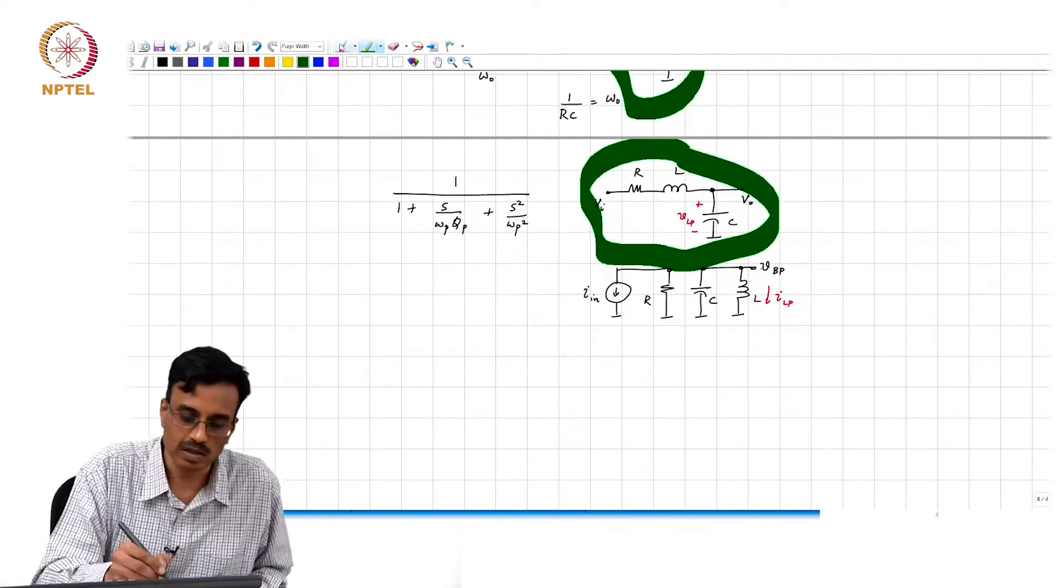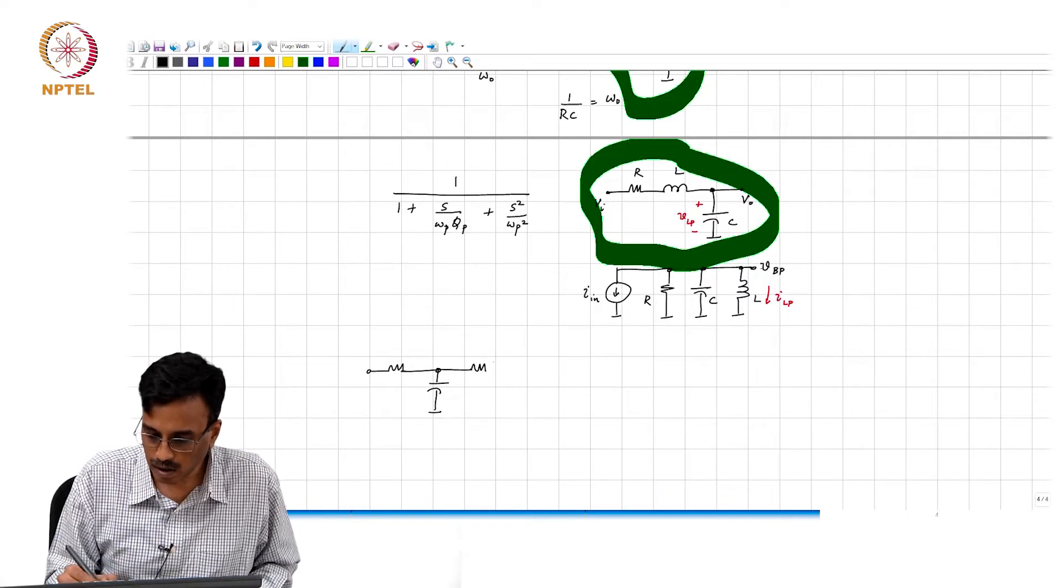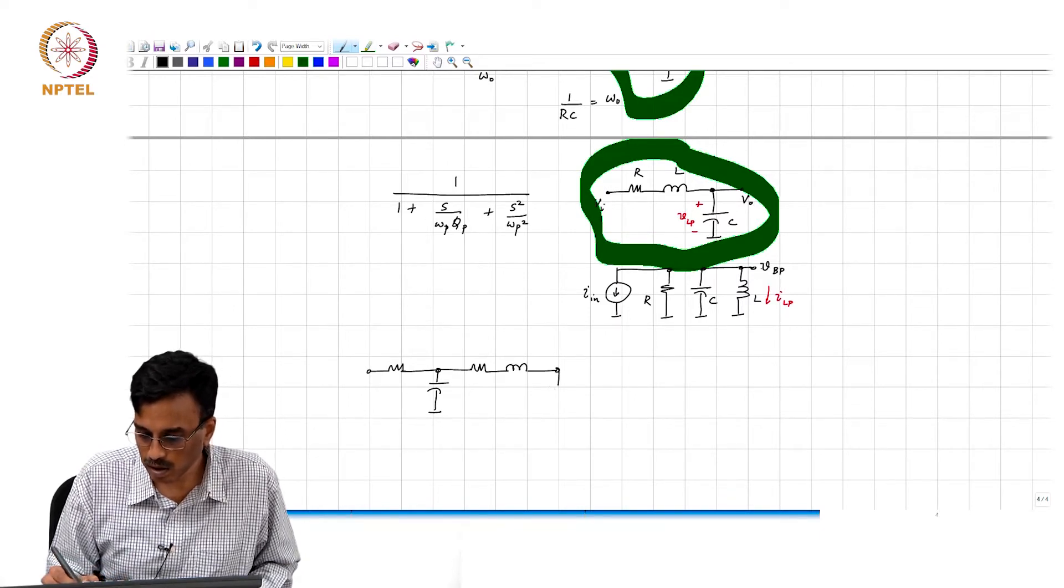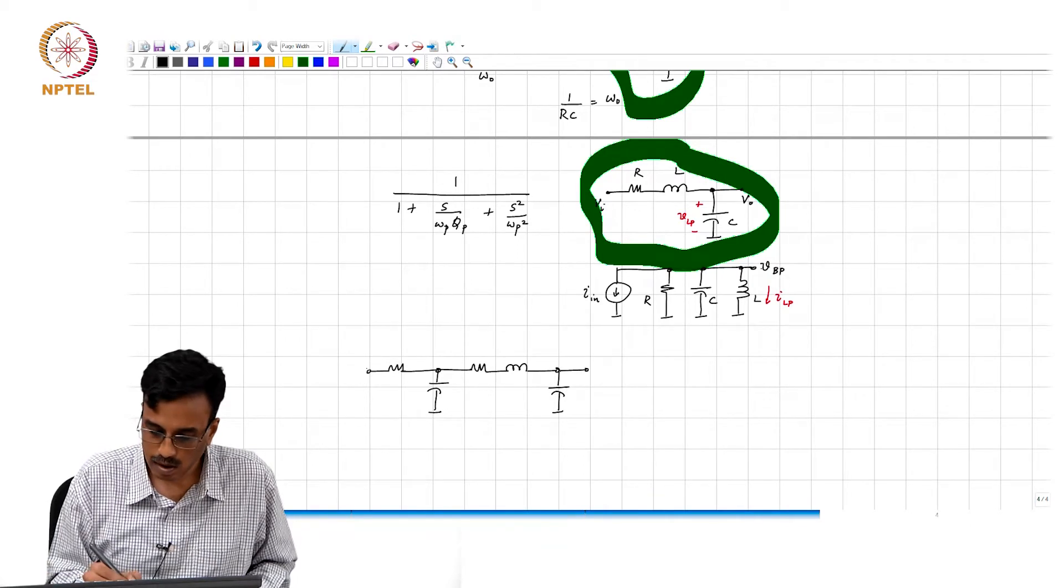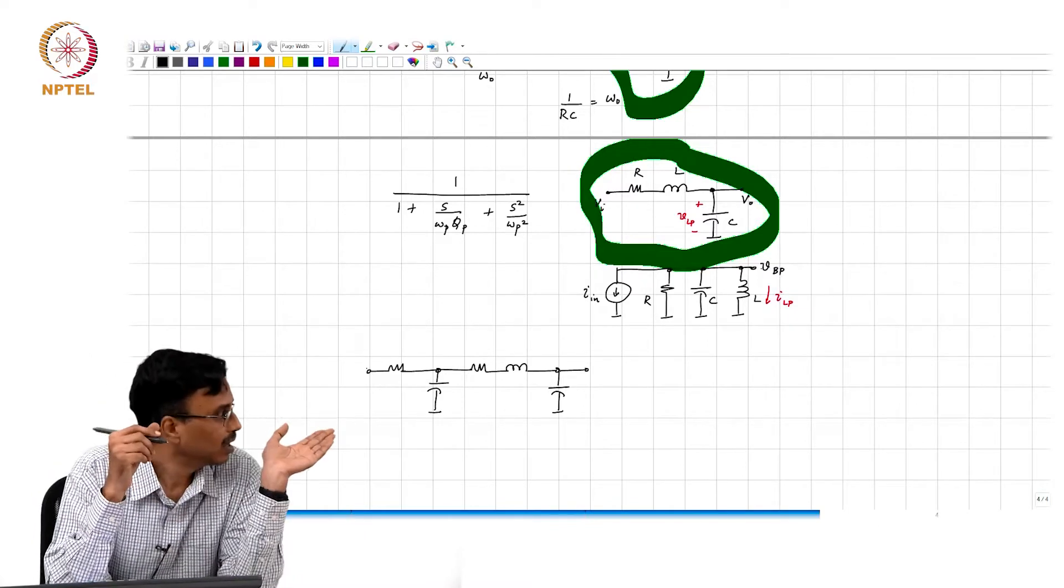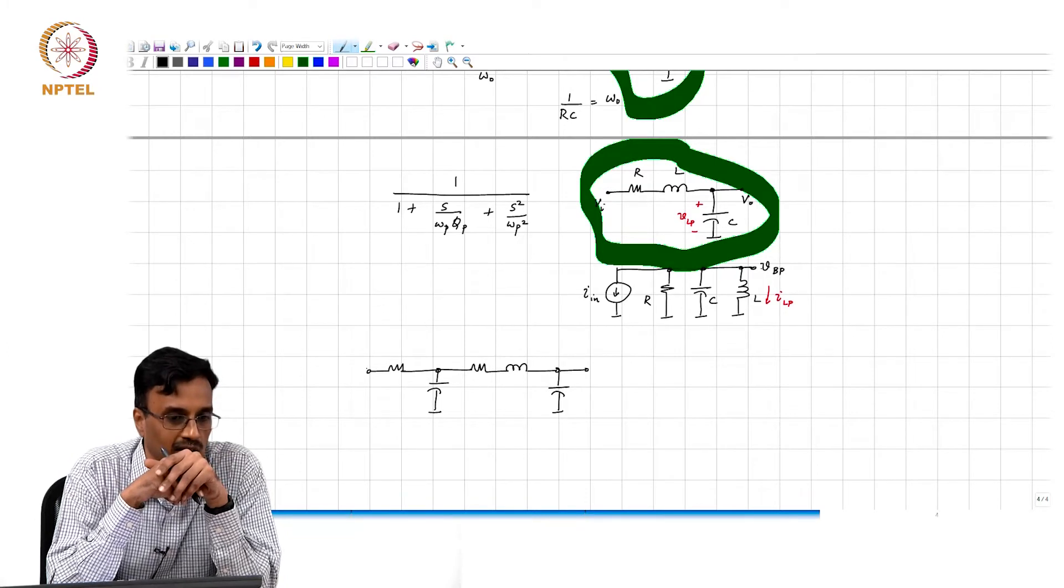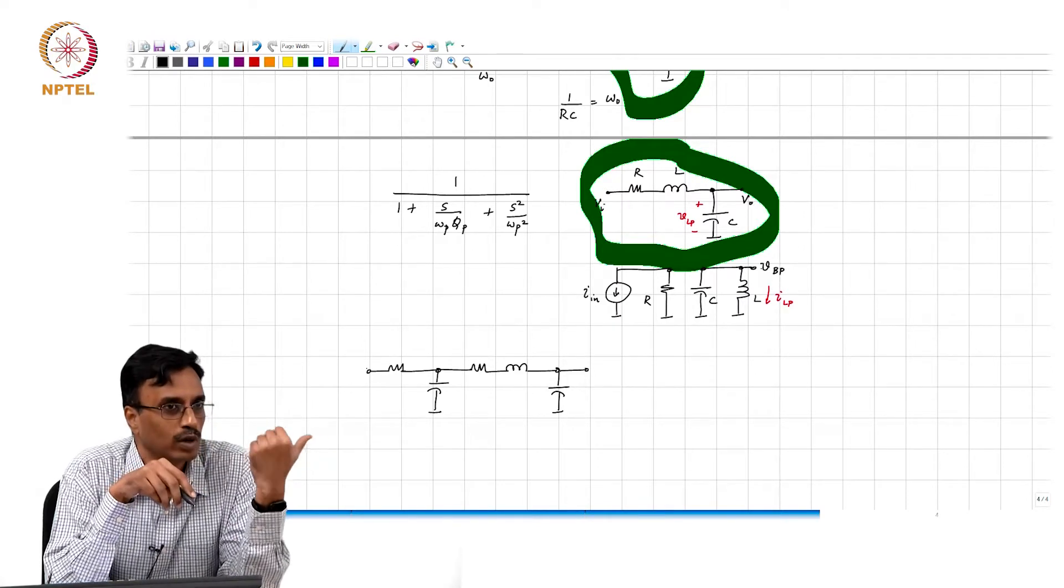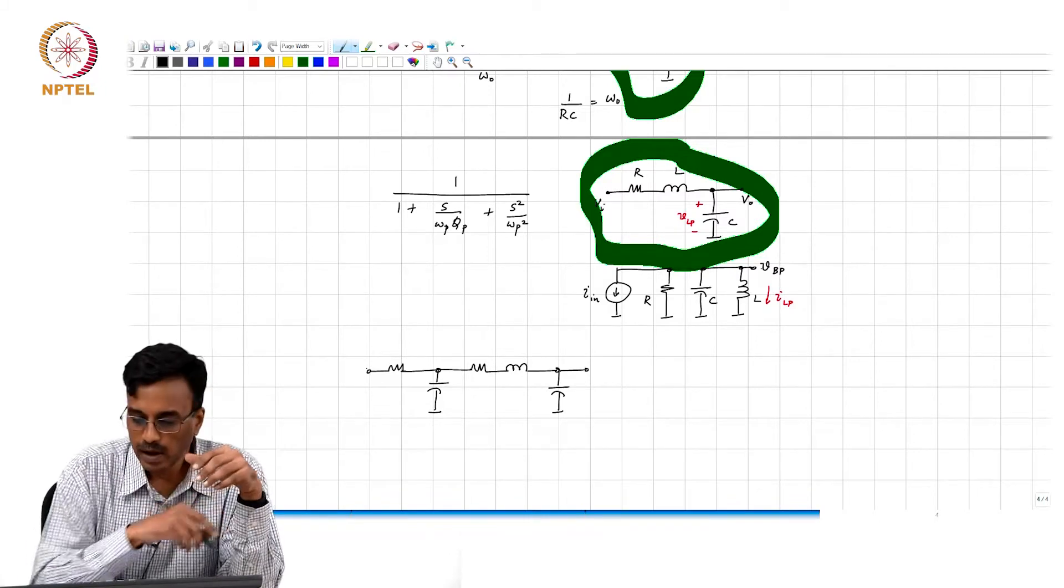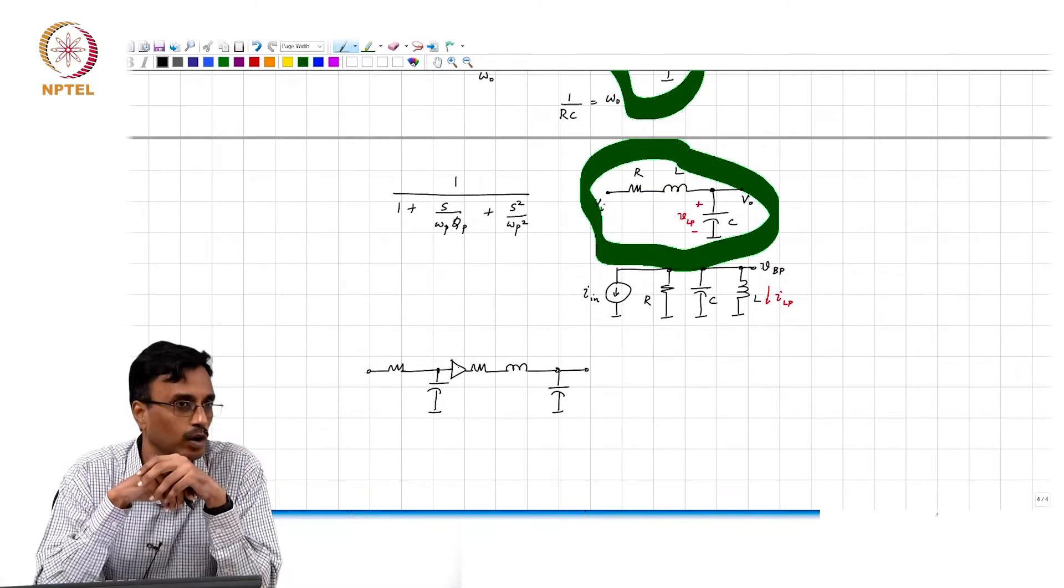Very good. One suggestion I get is, how about taking the first order transfer function and then the second order. Well, if you do this then the transfer function is all messed up. It is not the product of the two transfer functions because the second section will load the first one. Therefore, we need a buffer, some kind of control source so that loading is not a problem.